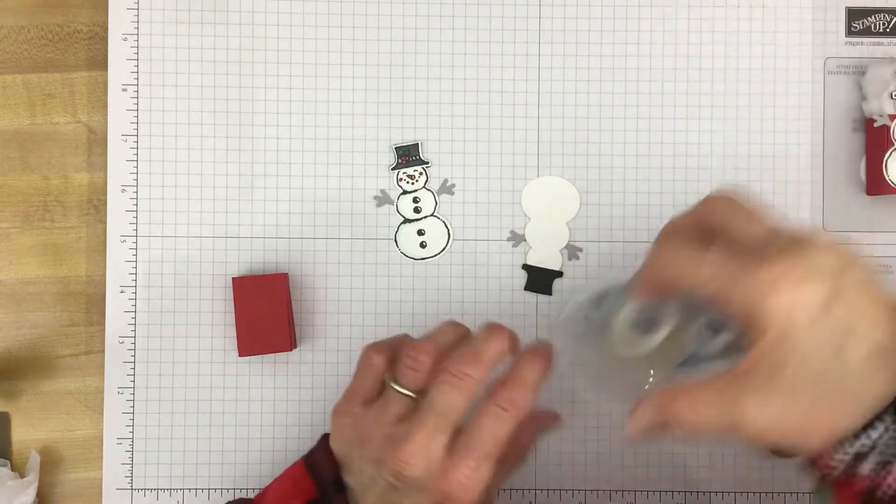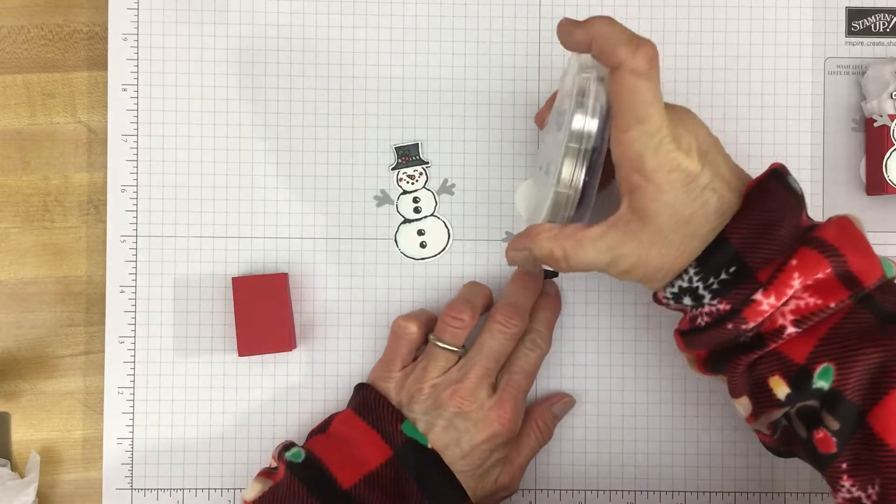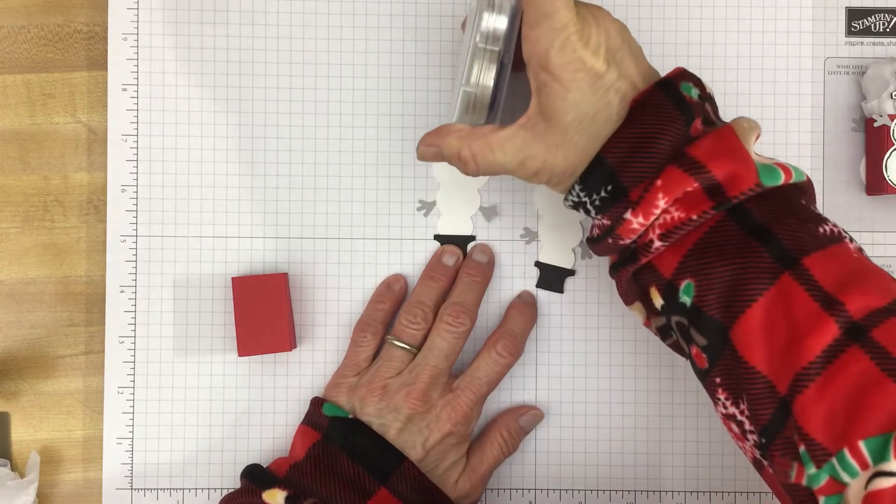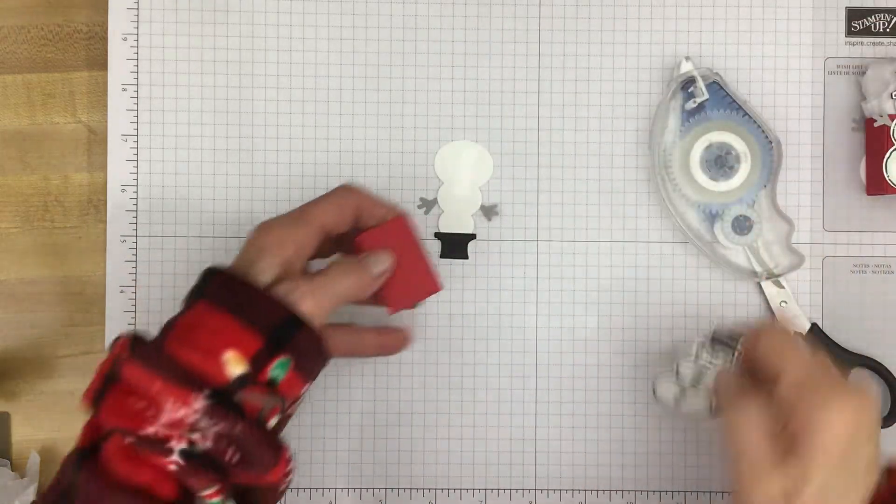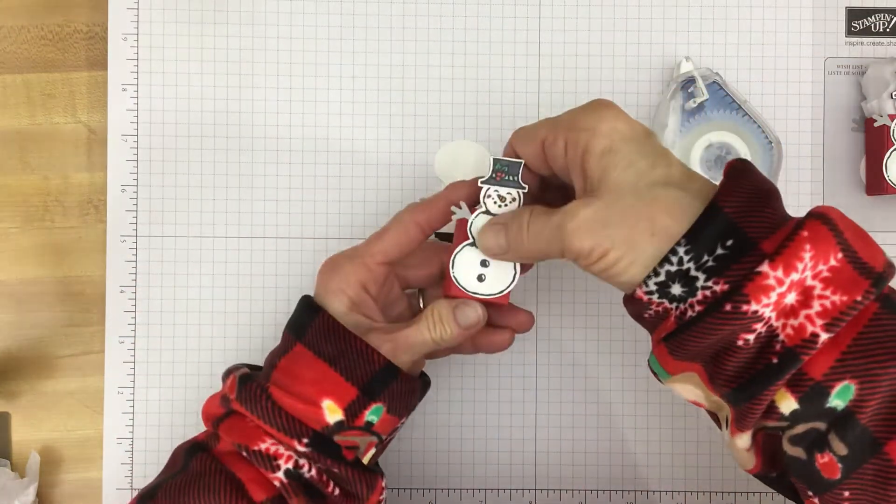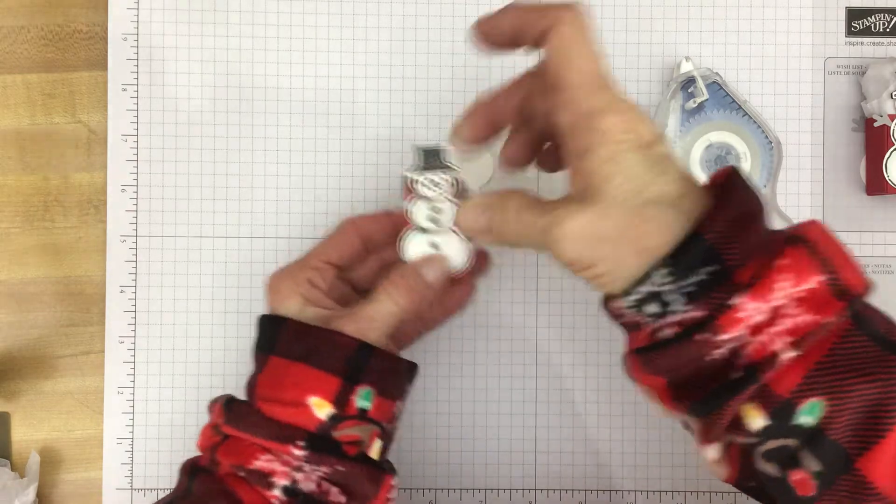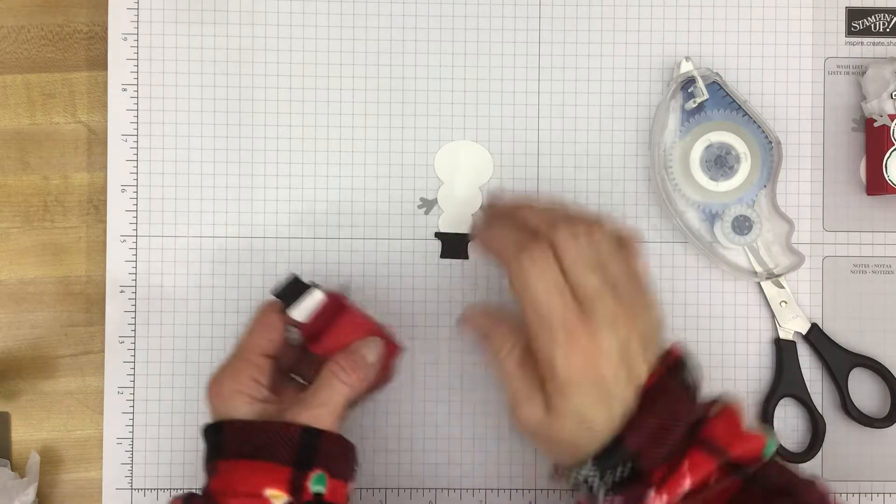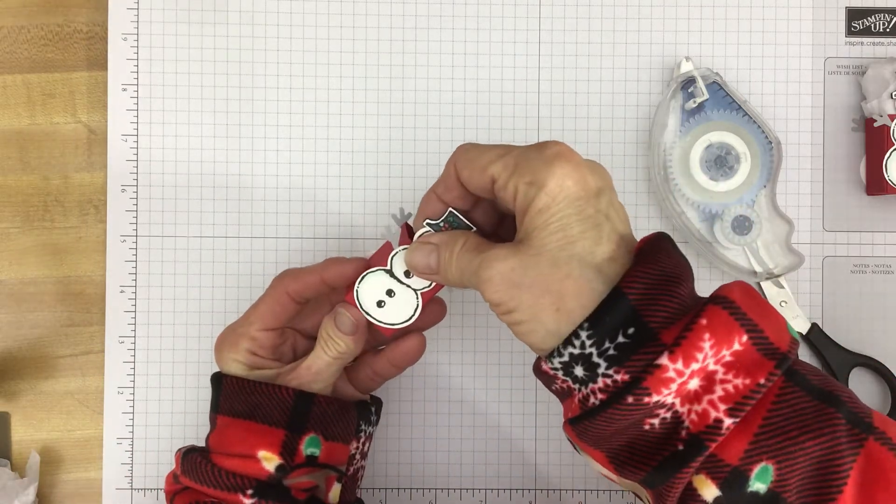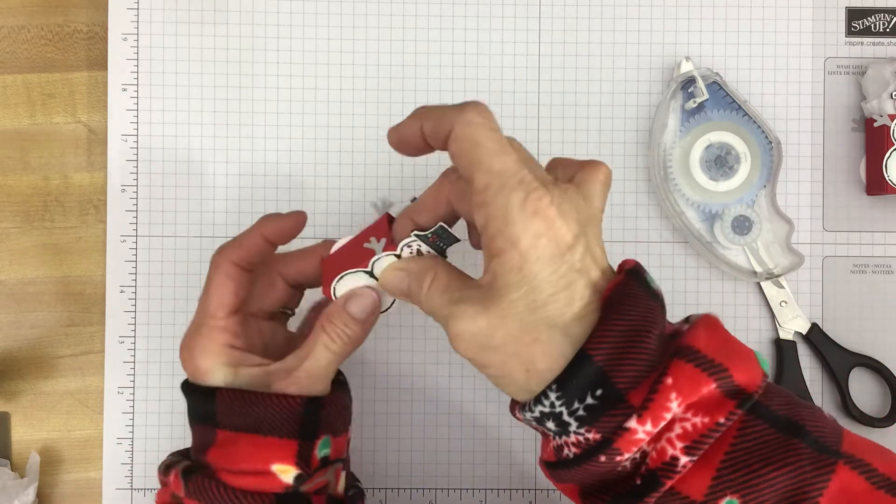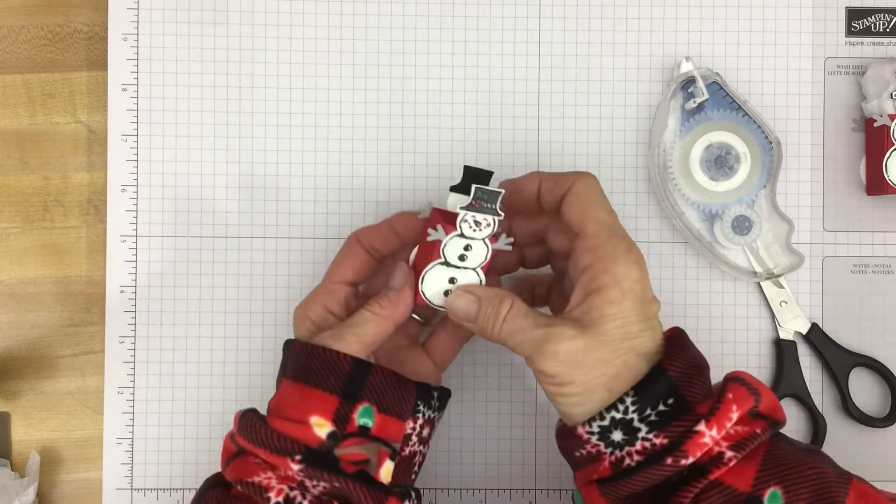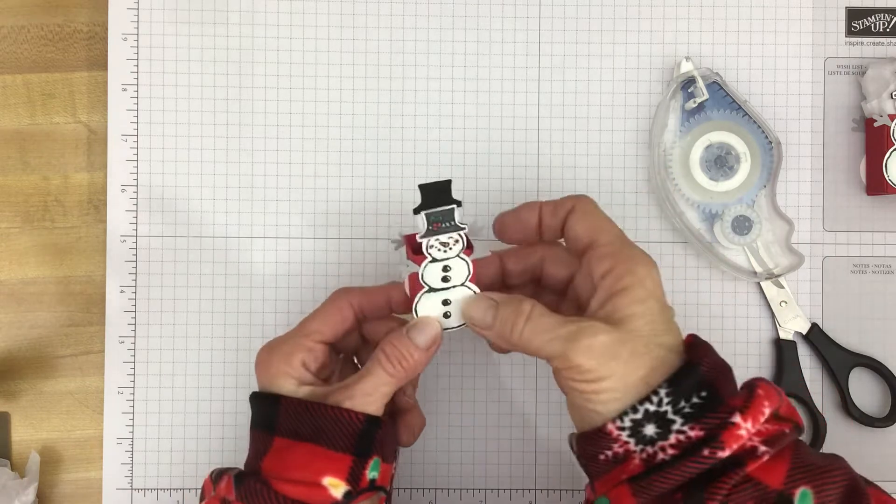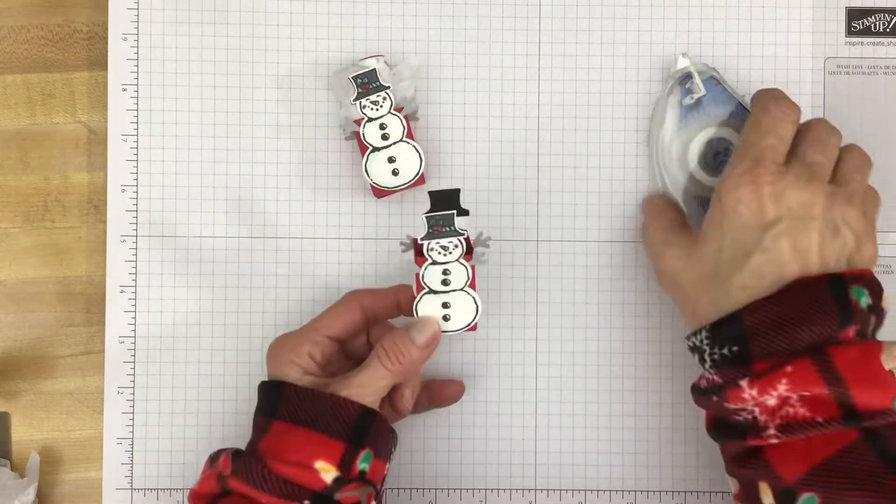And now all we need to do is put a little adhesive on the back of each snowman. And just line him up right here with the bottom and press. Now you could leave him like this if you like. You don't have to do the other side, but I just like to put one on each side. And there you go. You have a cute little box to put a little candy or the lip balm or whatever you like inside of there.